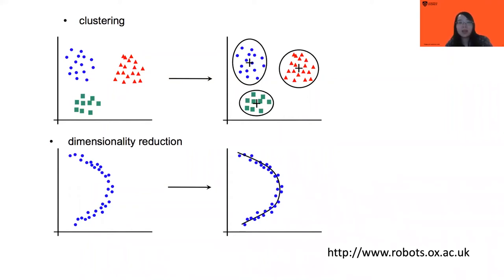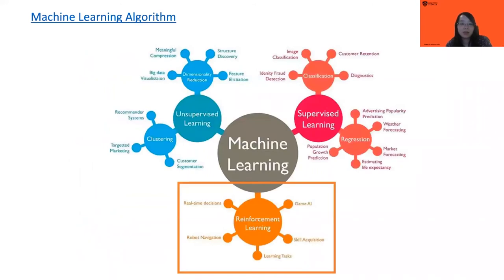The third branch is reinforcement learning. This algorithm takes an action according to the data point and then later assesses the decision. Techniques include Q-learning and deep adversarial networks. This algorithm is applicable in fields like game AI, learning paths, robot navigation, and real-time decision making.